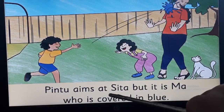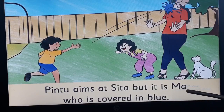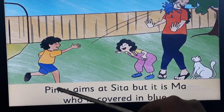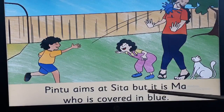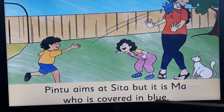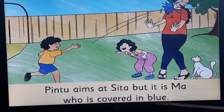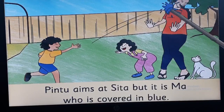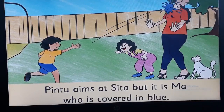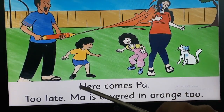Now turn the page. Pintu aims at Sita, but it is — who is she? — Ma. Pintu aims at Sita but it is Ma. Who is covered in — which color? Tell me. You have already read the story. Yes — Blue. Now we will see the right hand side page.